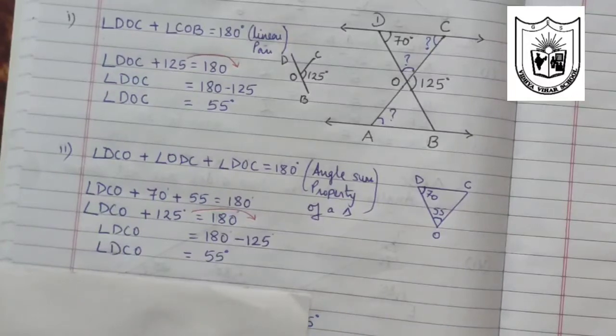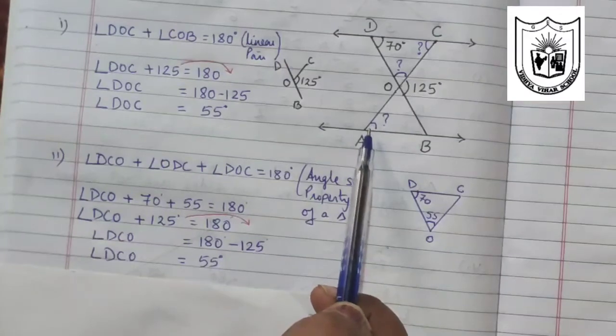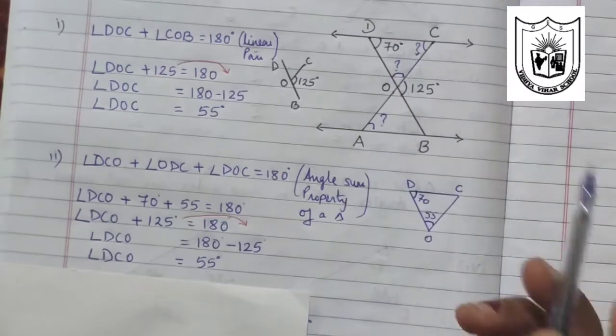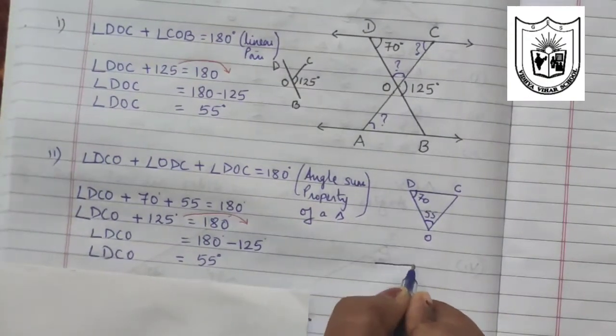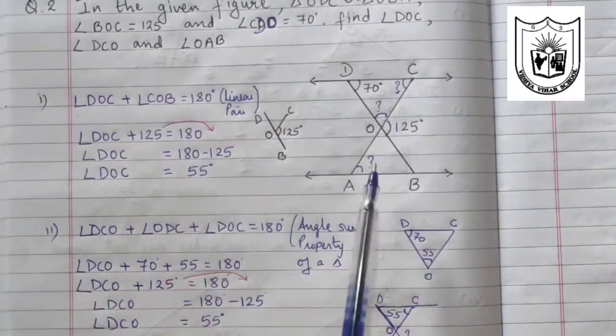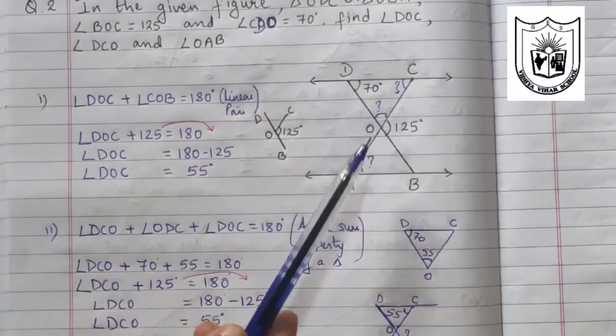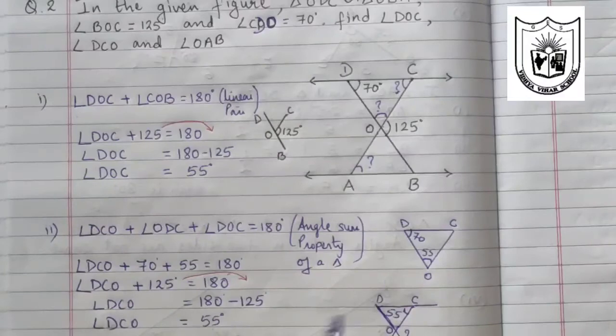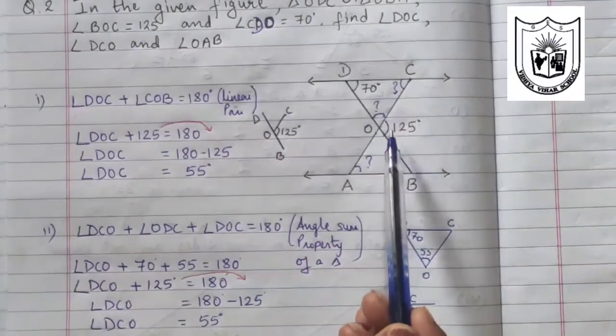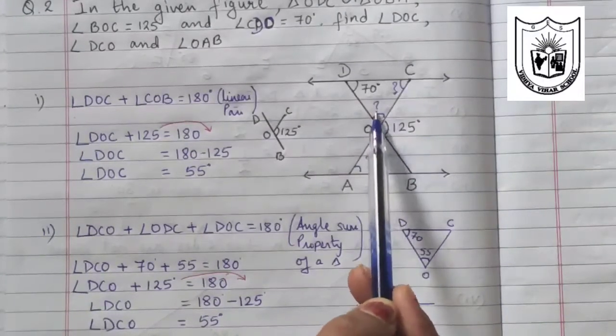Next, what we have to find is angle OAB. Look at the triangle here. This angle we are supposed to find. DCO we got as 55 degrees. Let me redraw that figure. It is given that both these triangles are similar. After doing linear pair, we got this angle as 55 degrees and this angle is also 55 degrees. Same way if these two angles take linear pair, this also becomes 55 degrees, or you can say vertically opposite angles.